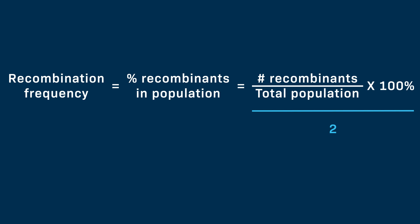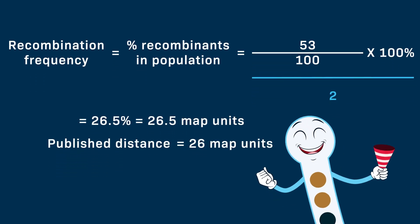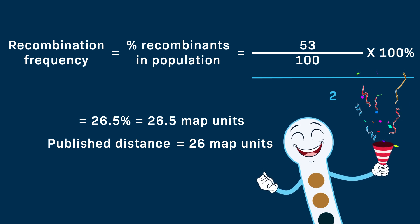Okay, I'm going to calculate the recombination frequency of my Sordaria population. I had 47 parental type asci and 53 recombinant type asci. So that's 53 divided by a total population of 100 times 100, then divide all that by 2. That's 26.5 percent. One percent recombination equals one map unit, so my data indicate that the color gene is 26.5 map units from the centromere. The published map distance for Sordaria is 26 map units, so mine was pretty close.